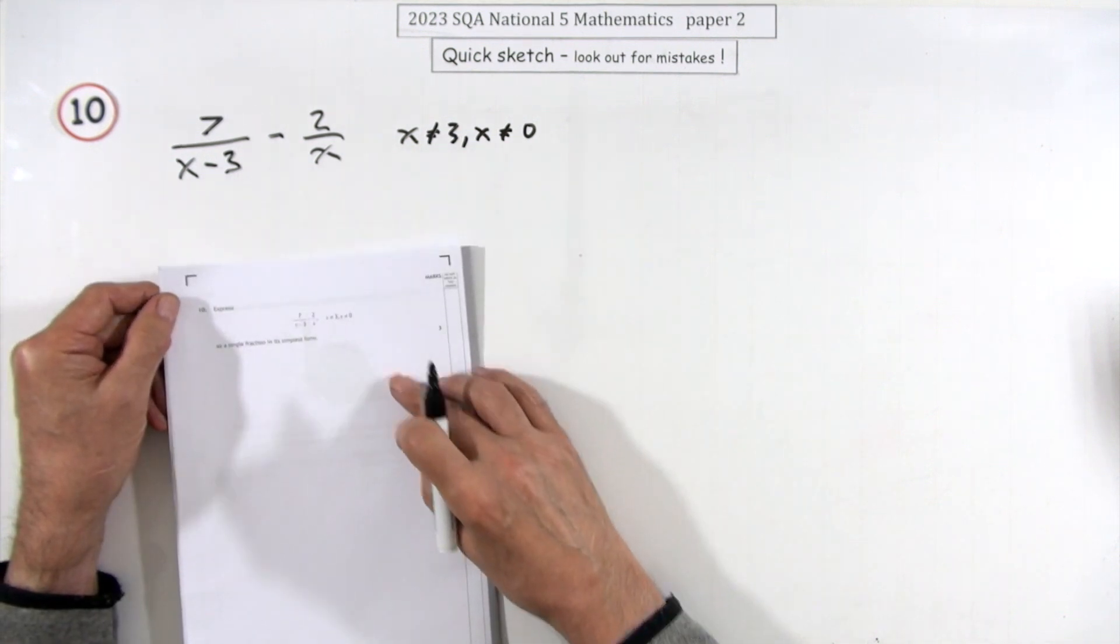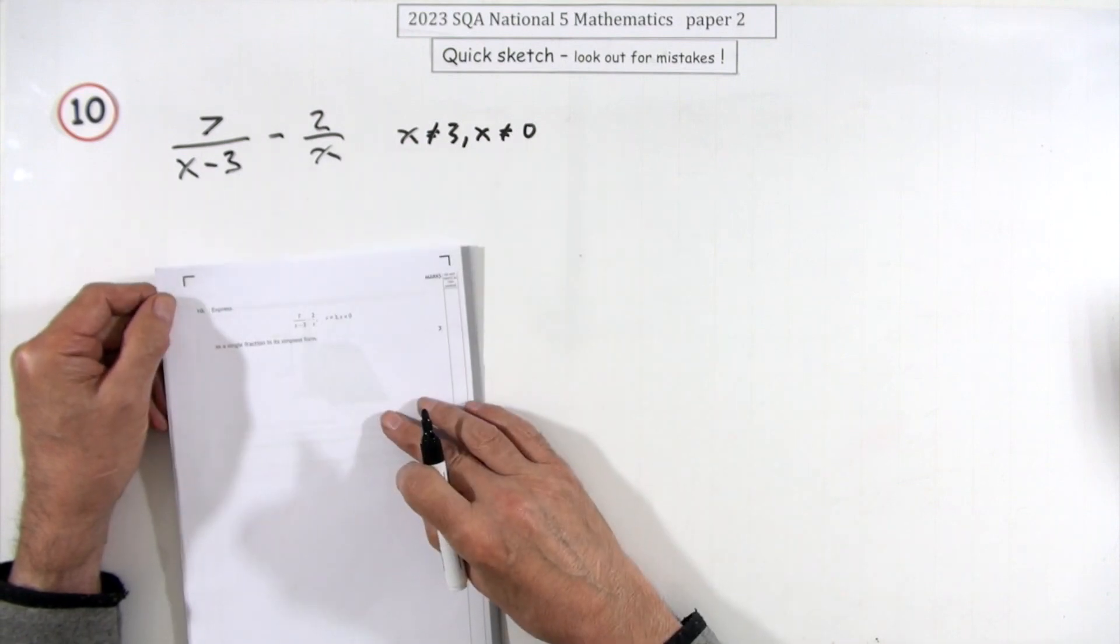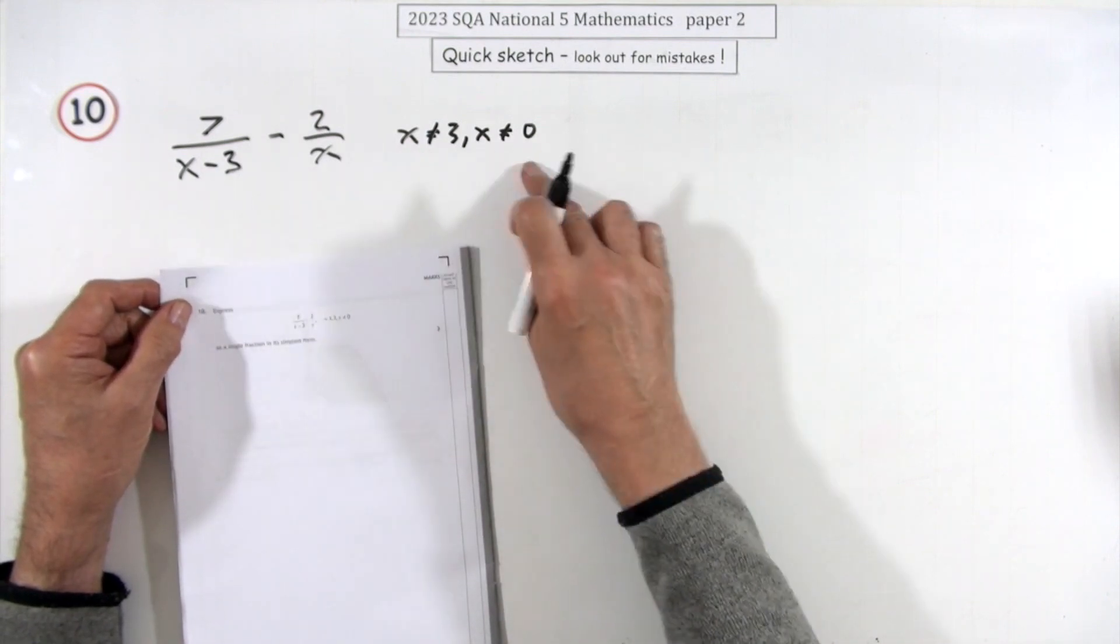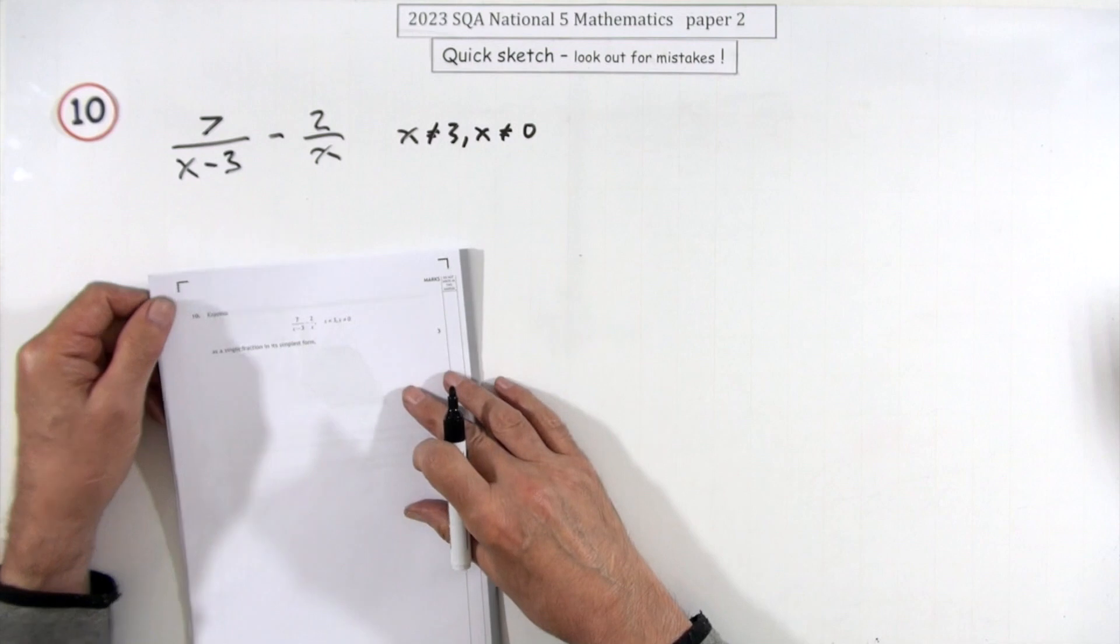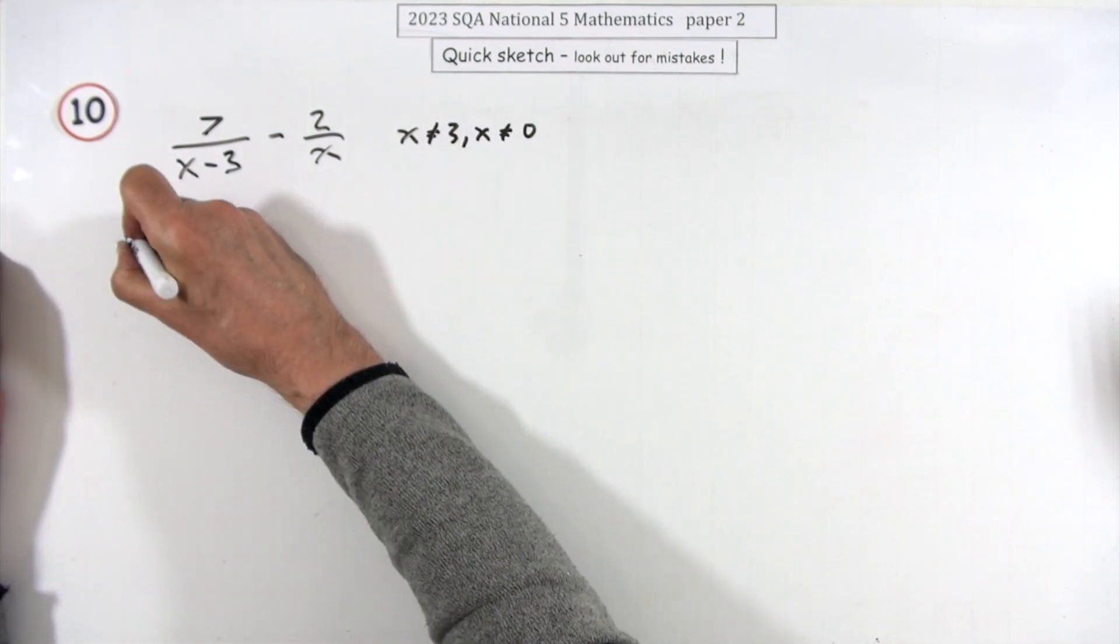Number 10, carry out this subtraction of these two fractions with expressions in them. Little warning at the side: note to try and put those numbers in if you want to stay safe. Three marks for this.